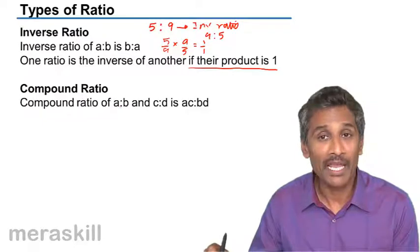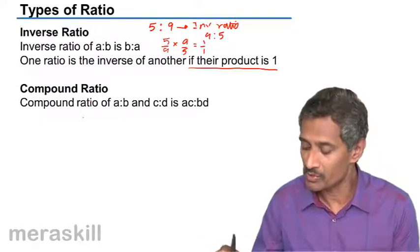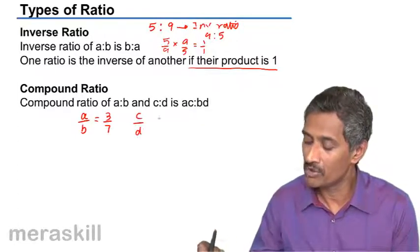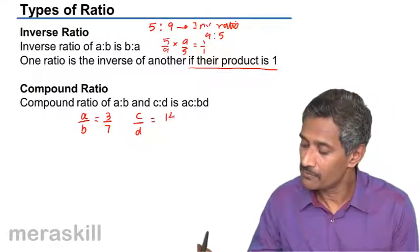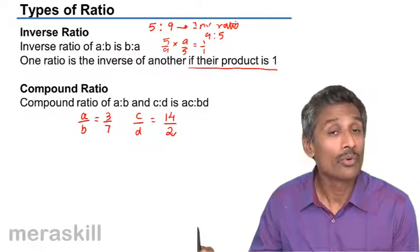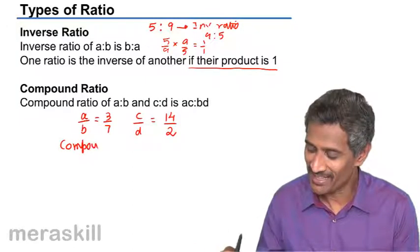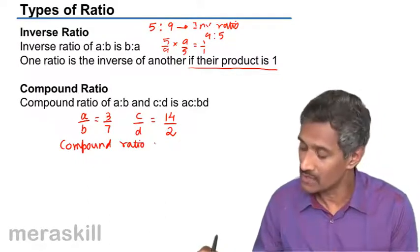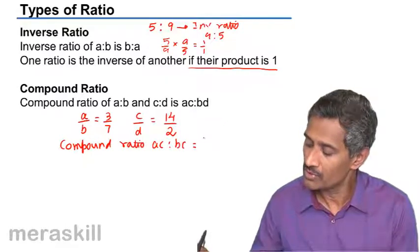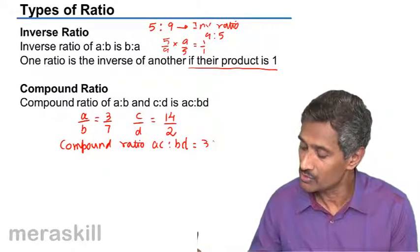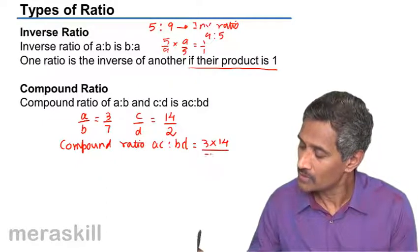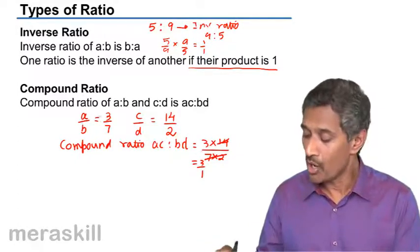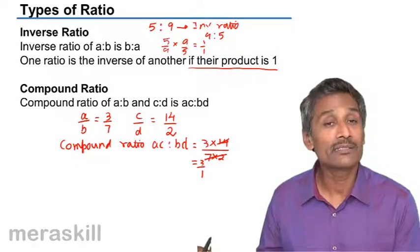Now, coming to compound ratio: A is to B and C is to D gives AC is to BD. Suppose A/B is 3/7 and C/D is 14/2. In that case, the compound ratio of these two — that is A is to B and C is to D — is AC is to BD. So that's 3 into 14 upon 7 into 2, which gives 3 is to 1.